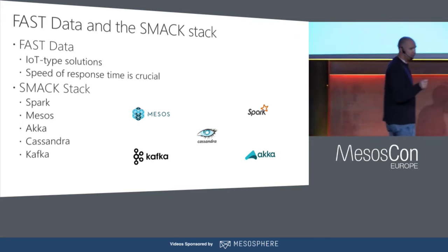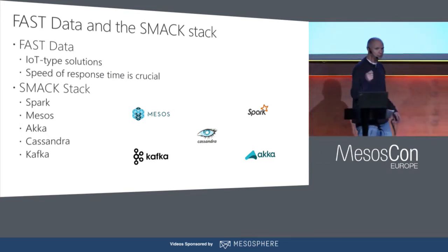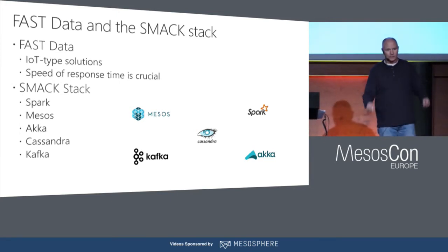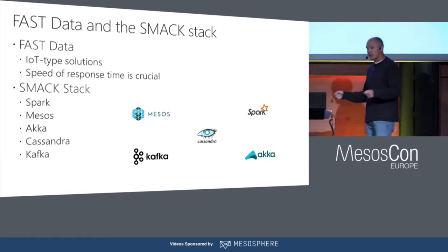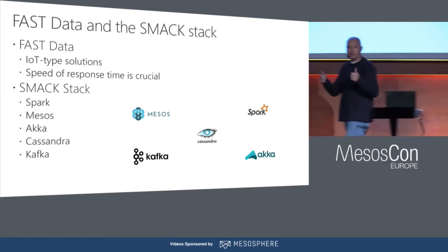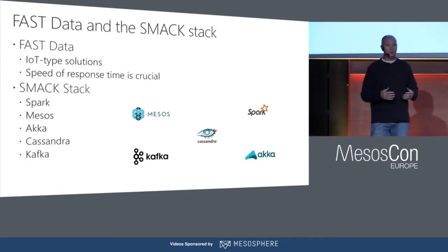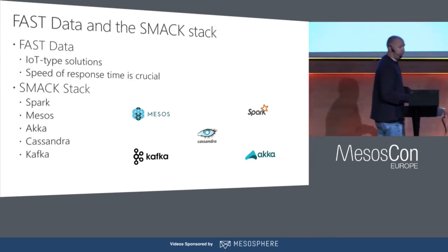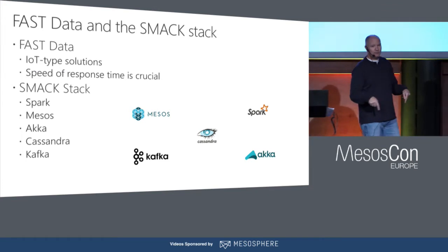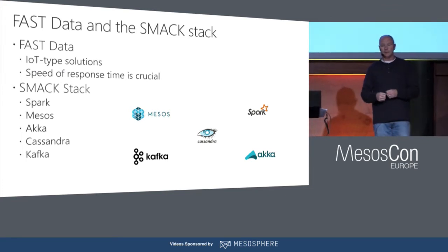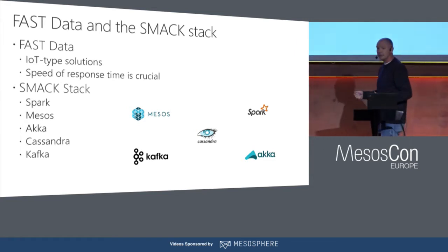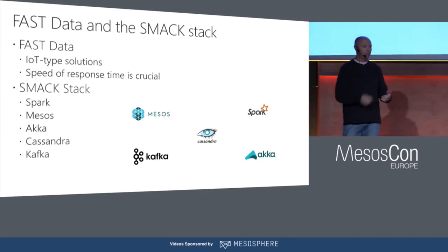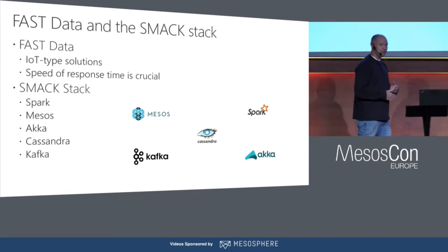Those gates use little RF chips in the tags on products. As you exit and hit that sensor, it determines the direction you're moving. If it detects you're moving towards the exit, it sends an event up to the cloud, computations are done to see if you purchased the product, and if you haven't, an event comes back down and the sensor alarms. If that round trip took 20 seconds instead of a couple hundred milliseconds, it would be valueless — the person would already be driving away.